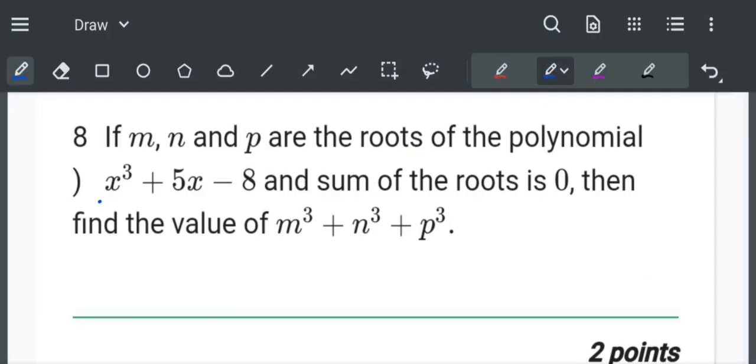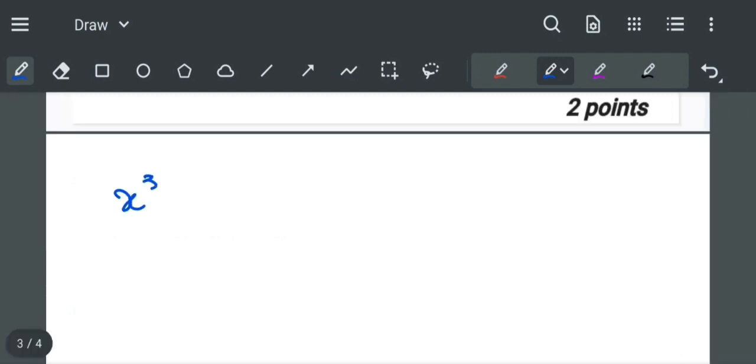In this question we are given one cubic polynomial whose roots are given as m, n, and p, and sum of roots is 0. Then find the value of m cube plus n cube plus p cube. The polynomial x cube plus 5x minus 8 has three roots as m, n, and p.